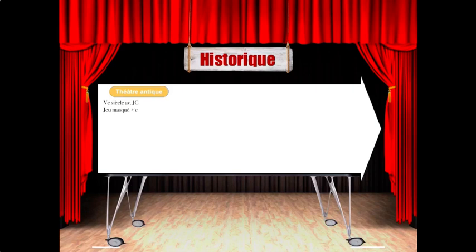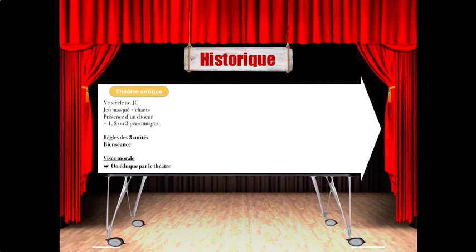On commence avec le théâtre antique — je le rappelle, 5e siècle avant Jésus-Christ — un jeu masqué et chanté, et bien sûr déjà la présence des règles des trois unités, la bienséance et également la vraisemblance, qui sont déjà imposées dans ce théâtre. Bien sûr, le but, l'objectif final de ce théâtre, c'est la visée morale. On éduque par le théâtre. Et le dernier grand auteur tragique de cette époque, c'est Euripide.